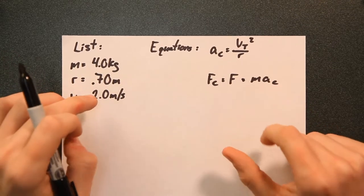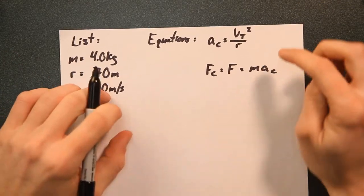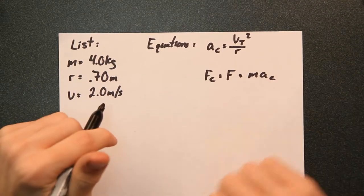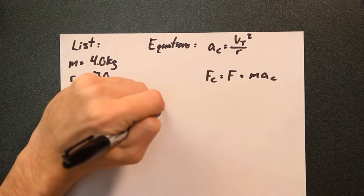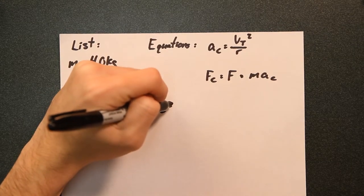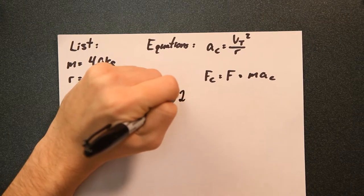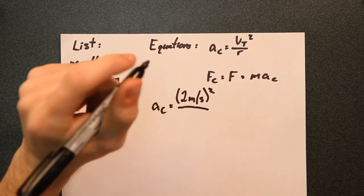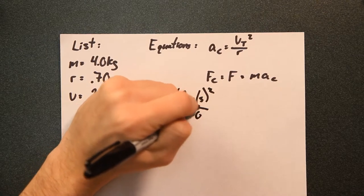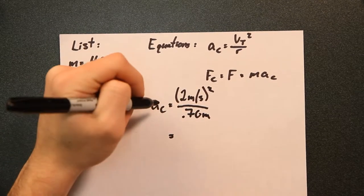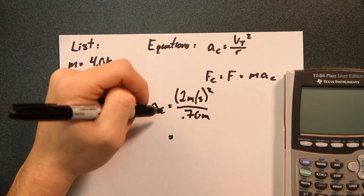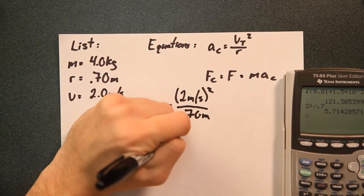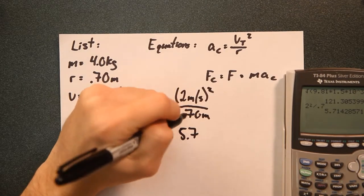So the first thing we're going to want to do is find the centripetal acceleration using this equation up top here. A sub c is equal to v sub t squared over r. So in this case, we're going to have a sub c is equal to 2 meters per second. That's going to actually be squared over our radius of 0.70 meters. And that's going to give you 5.7, which is meters per second squared.